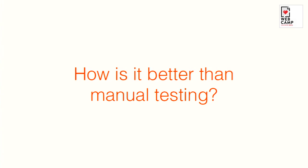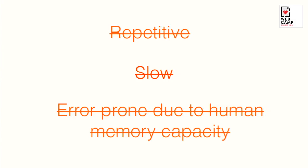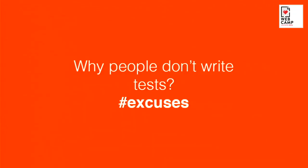How is automated testing better than manual testing? Well, manual testing has three characteristics — automated tests don't have those. Computers don't mind doing repetitive tasks. Secondly, computers are extremely fast at doing those repetitive tasks, faster than us clicking around the browser. And they're not error-prone due to human memory capacity — you write something down and it stays there.